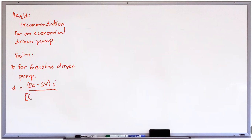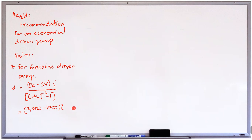We now proceed to example two. A gasoline-driven pump and an electric power pump are being considered for use in a mine for a period of 10 years. We have a table showing first cost, useful life, salvage value, annual operating costs, annual repairs, and annual taxes for each alternative. The question is: if money is worth 12% compounded annually, which would you recommend on the basis of annual costs?